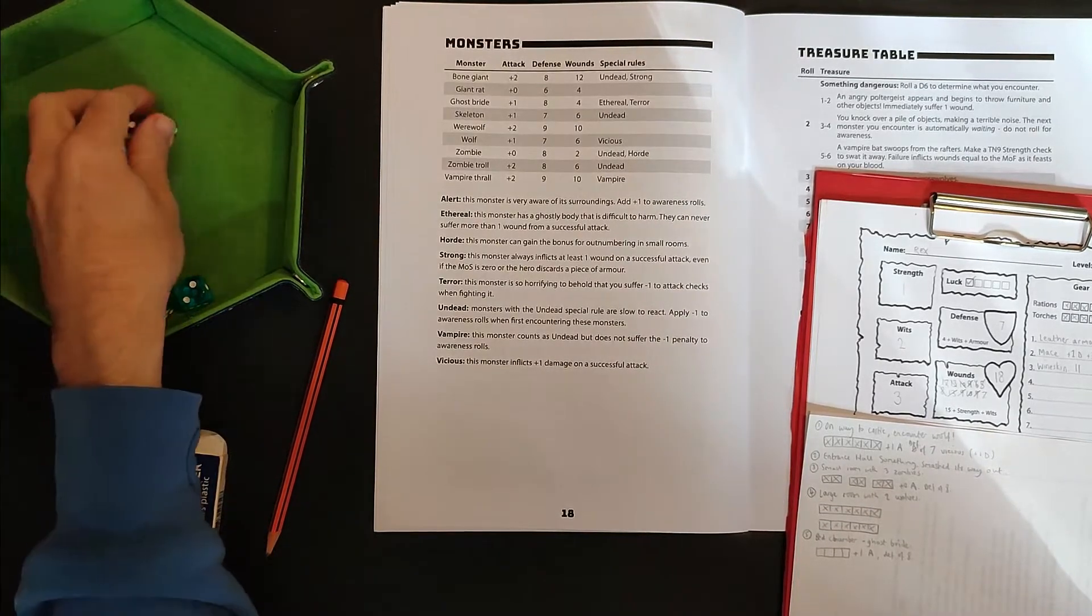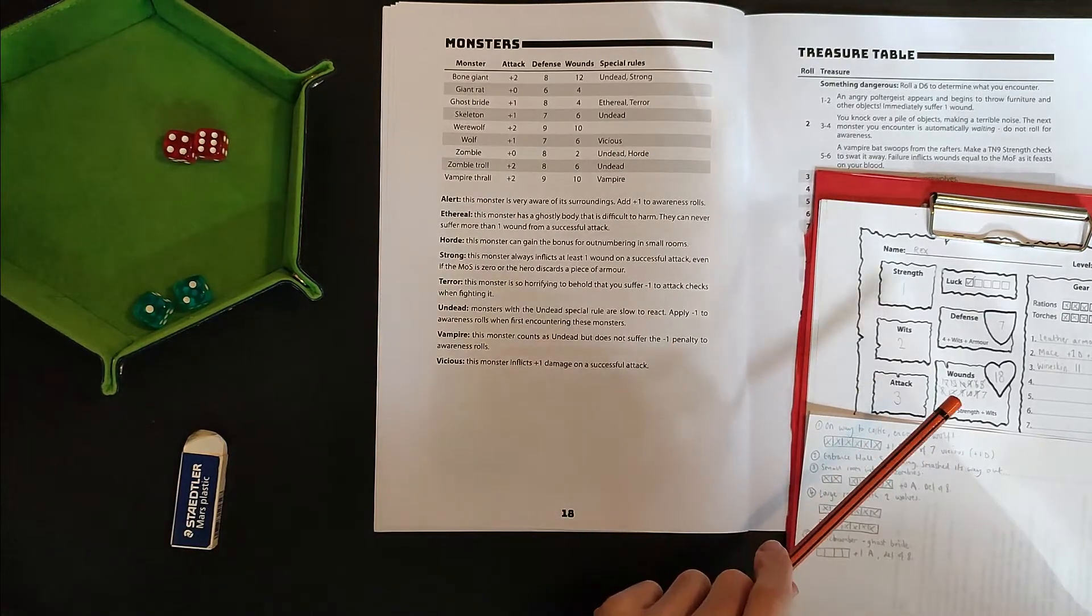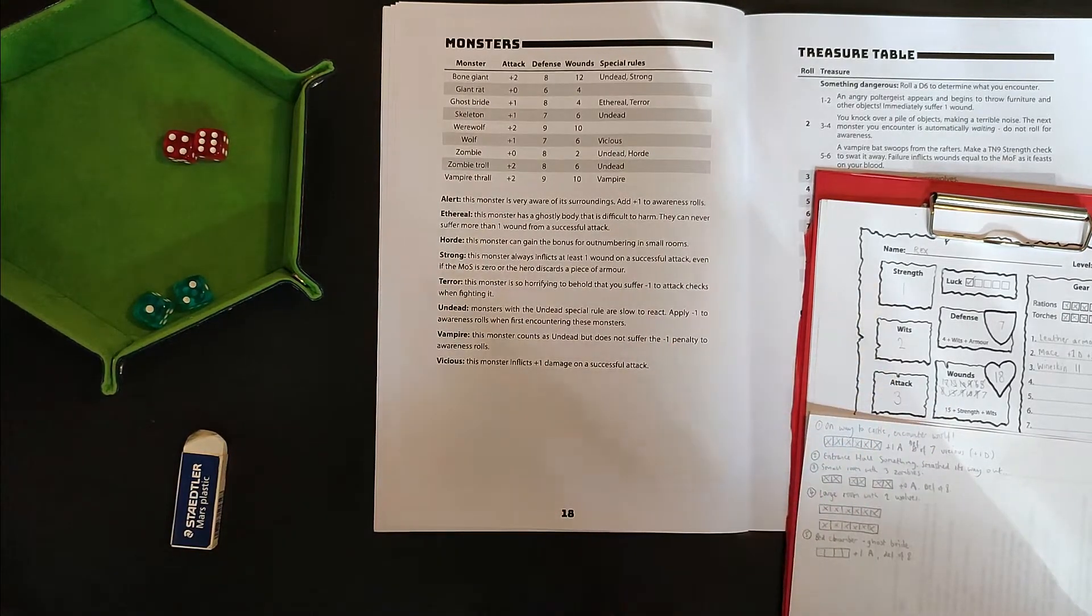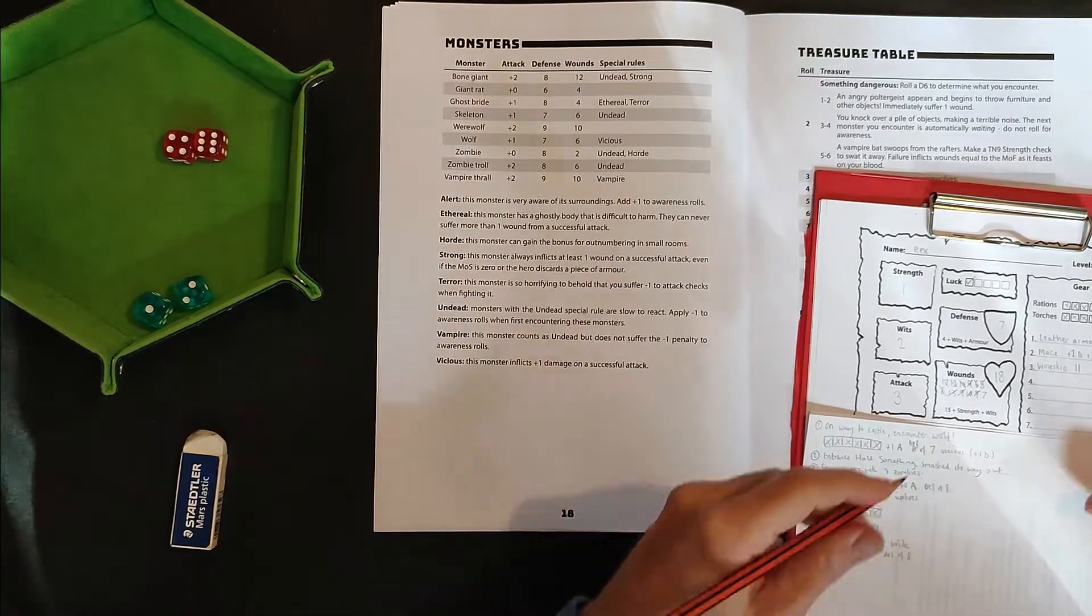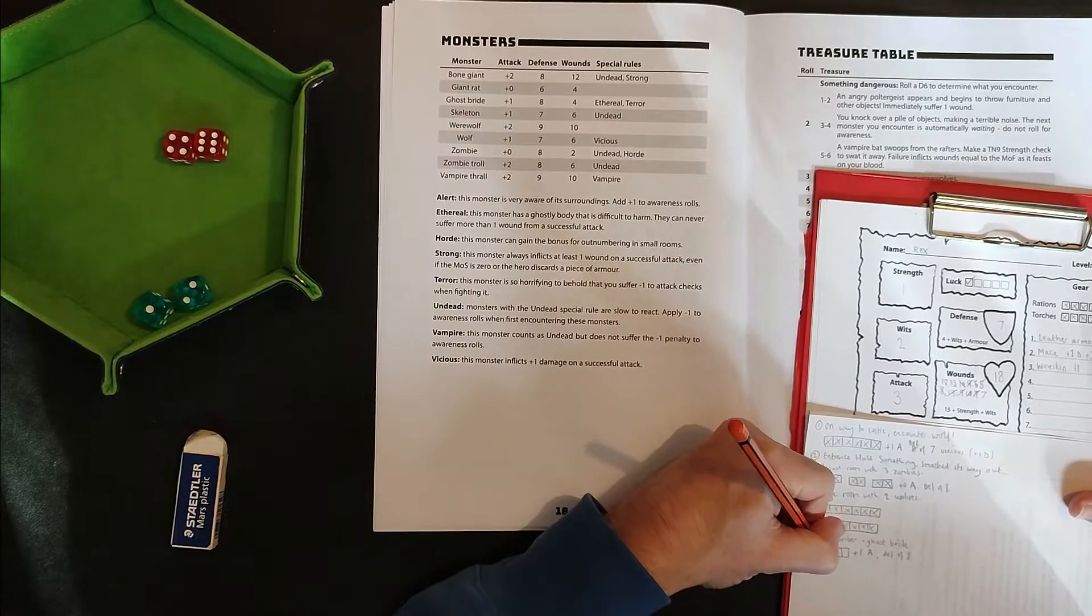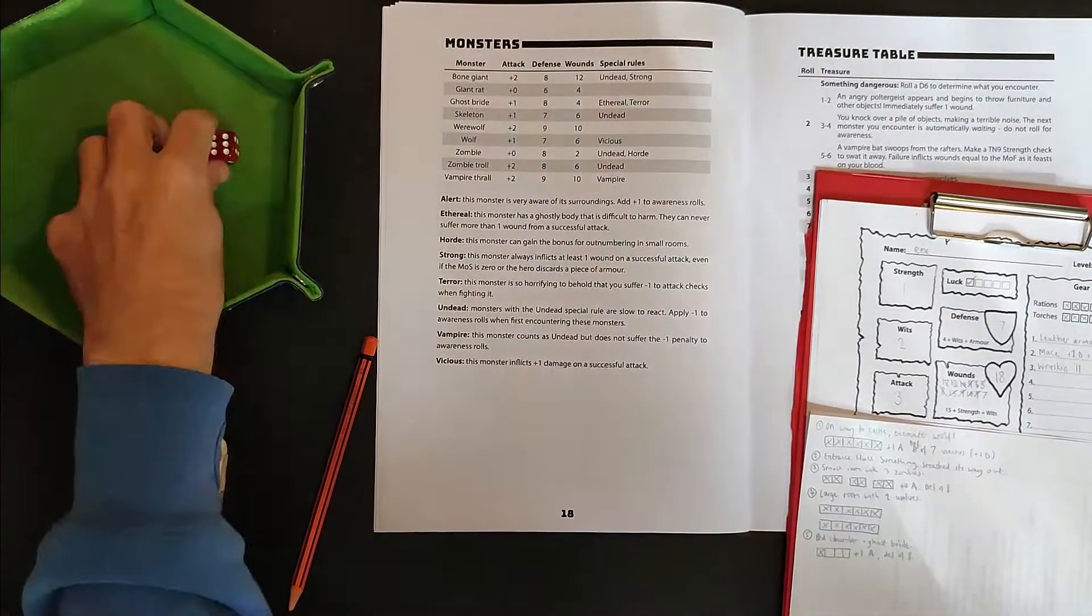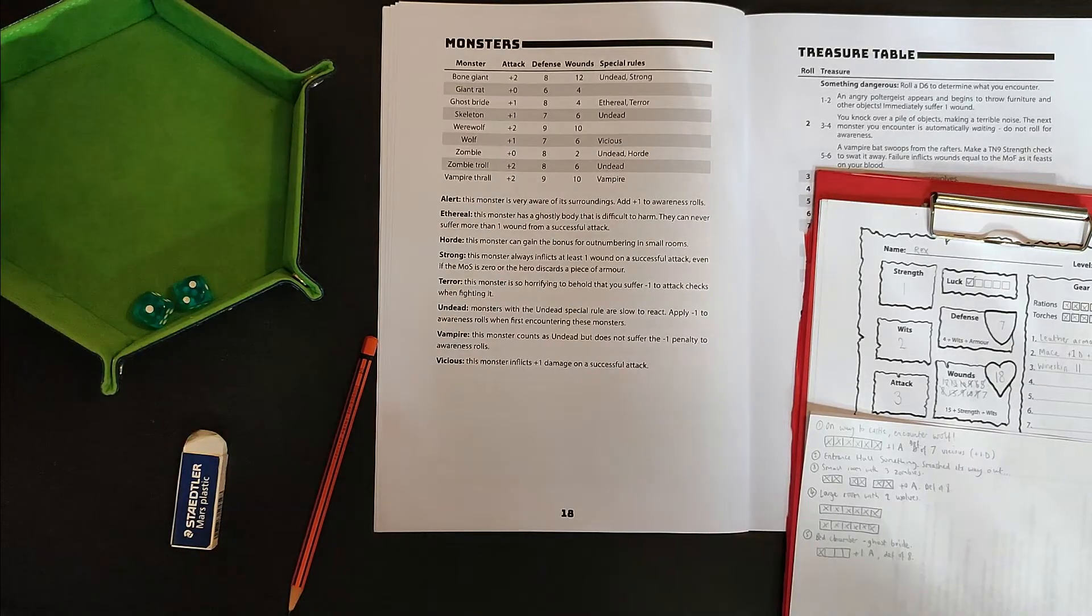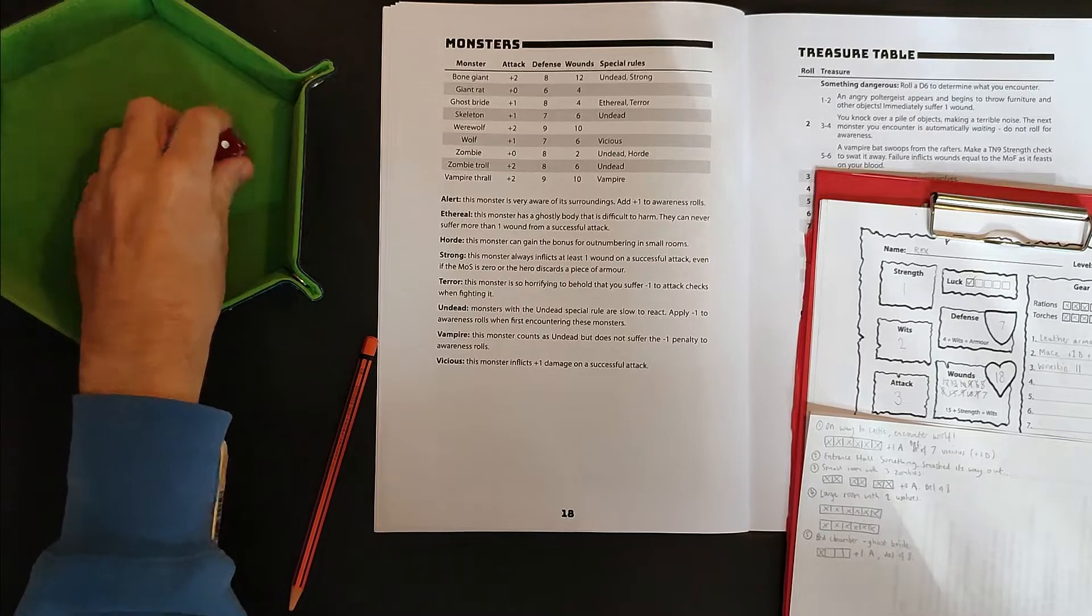That's more like it. Six, seven, eight, nine, 10, 11, 12, 13. I don't think I need to work out my margin of success on that one. That's definitely doing a point of damage. Only one though, because I can only do one at a time. So then the bride attacks back. Oh, good. No damage done. Then I attack. Rex attacks.